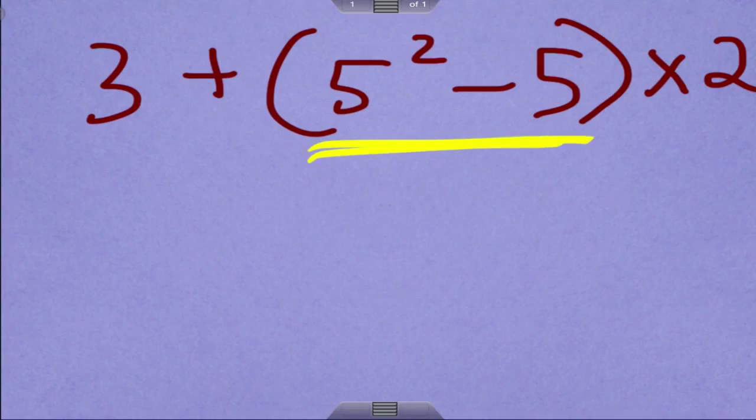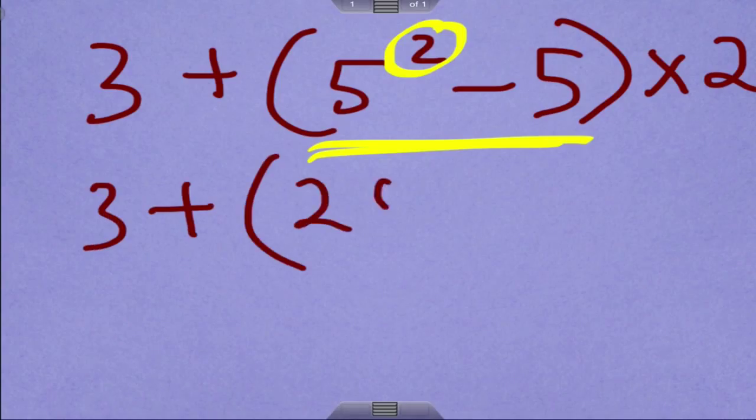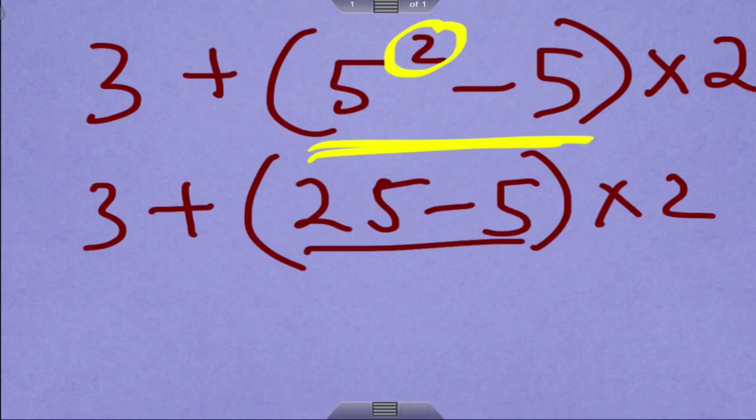But I can't really do anything yet because of our exponent. So we've got to work on the exponent first in there. So 3 plus 5 squared is 25 minus 5 times 2. So now we can work on this. So I have 3 plus 25 minus 5 is 20 times 2.